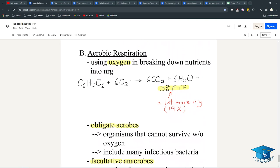Aerobic respiration means using oxygen to break down nutrients into energy. With oxygen, you get 38 ATP now, and they produce carbon dioxide and water like how humans do it, and you get 19 times more energy. Obligate aerobes are organisms that cannot survive without oxygen and include many infectious bacteria.